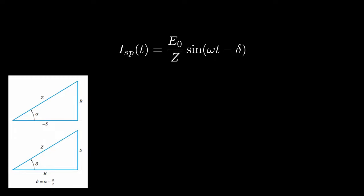Notice how since R and S are flipped, alpha and the delay angle are always going to be off by pi over 2. Using the same triangle, we can now solve for what the delay angle is, which is going to be the arctangent of S over R, which is the arctangent of LC omega squared minus 1 over omega RC. And now, we finally have the ideal form for the steady periodic solution.